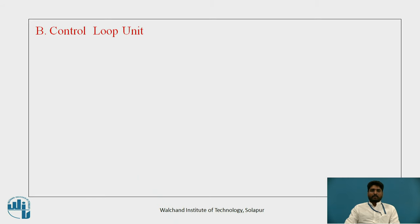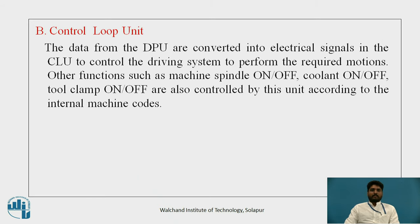The Control Loop Unit (CLU) converts the data from the DPU into electrical signals to control the driving system and perform the required motions. Other functions such as machine spindle on or off, coolant on or off, and tool clamp on or off are also controlled by this unit according to the internal machine codes.